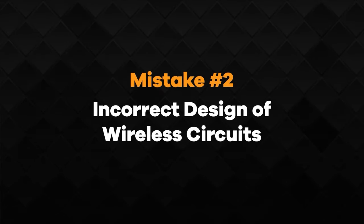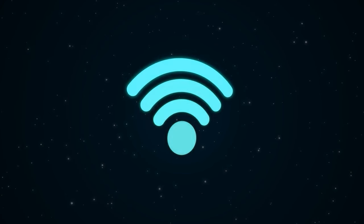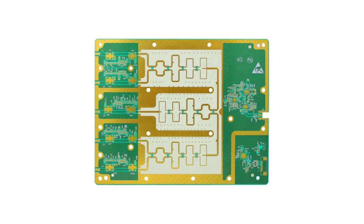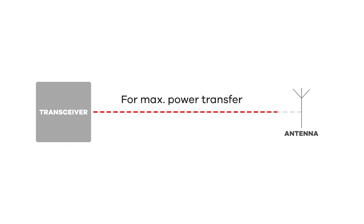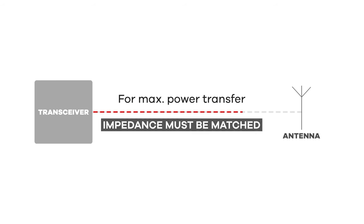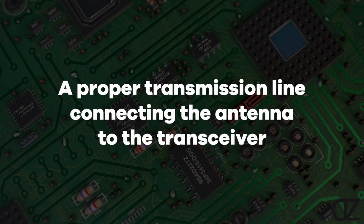Mistake number two is incorrect design of wireless circuits. If a product has any wireless functionality, the PCB layout for any RF portion is super critical. Unfortunately, it's done wrong more often than it's done right, so pay close attention to this one. For maximum power transfer between a transceiver and the antenna, their impedance must be matched. This means two things are required. First is a proper transmission line connecting the antenna to the transceiver, fabricated on the PCB specifically for carrying microwaves, which are just high-frequency radio waves.